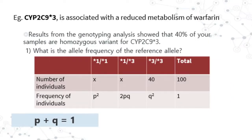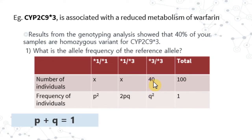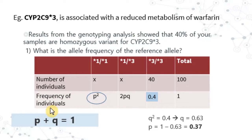The second example is CYP2C9*3, which is associated with reduced metabolism of warfarin. Genotyping results showed that 40% of the samples are homozygous variant for CYP2C9*3. So what is the allele frequency of the reference allele? Since q-squared equals 0.4, q equals 0.63. Using p plus q equals 1, p equals 1 minus 0.63, so p equals 0.37.